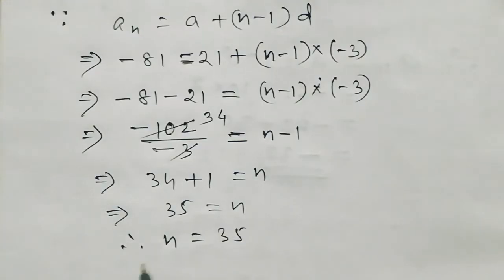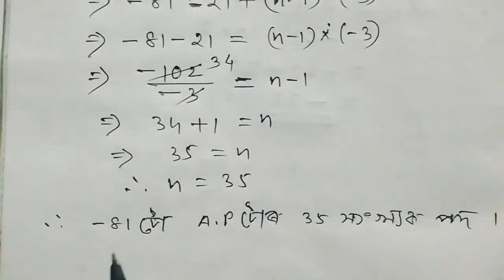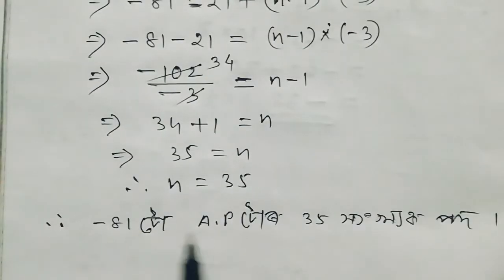So n is equal to 35. The 35th term of the AP equals minus 81.